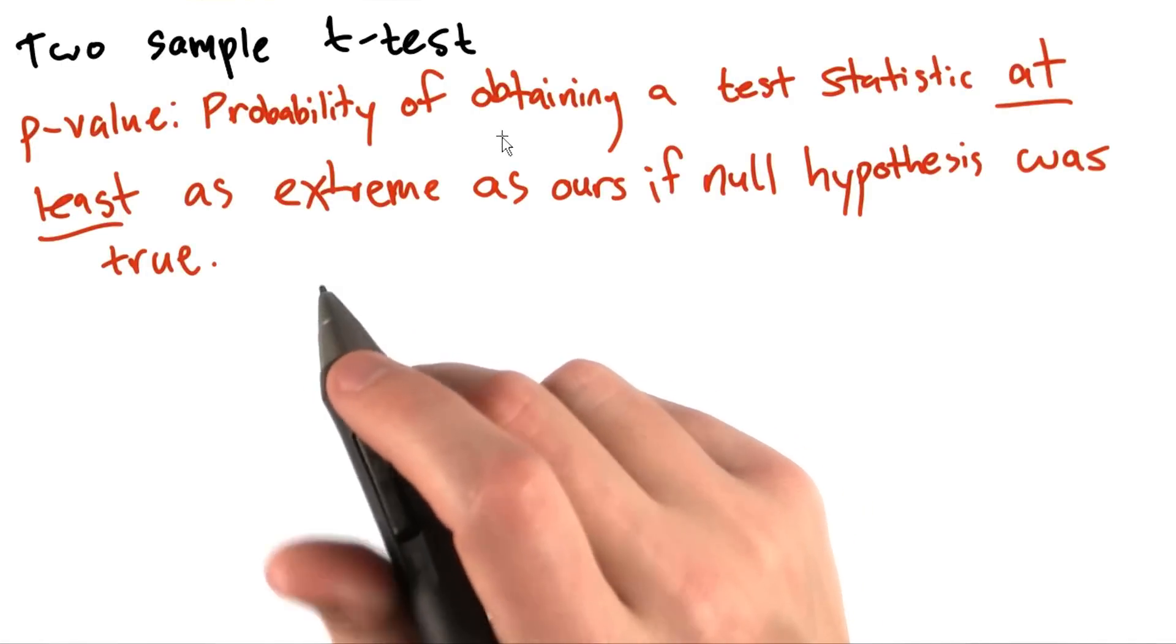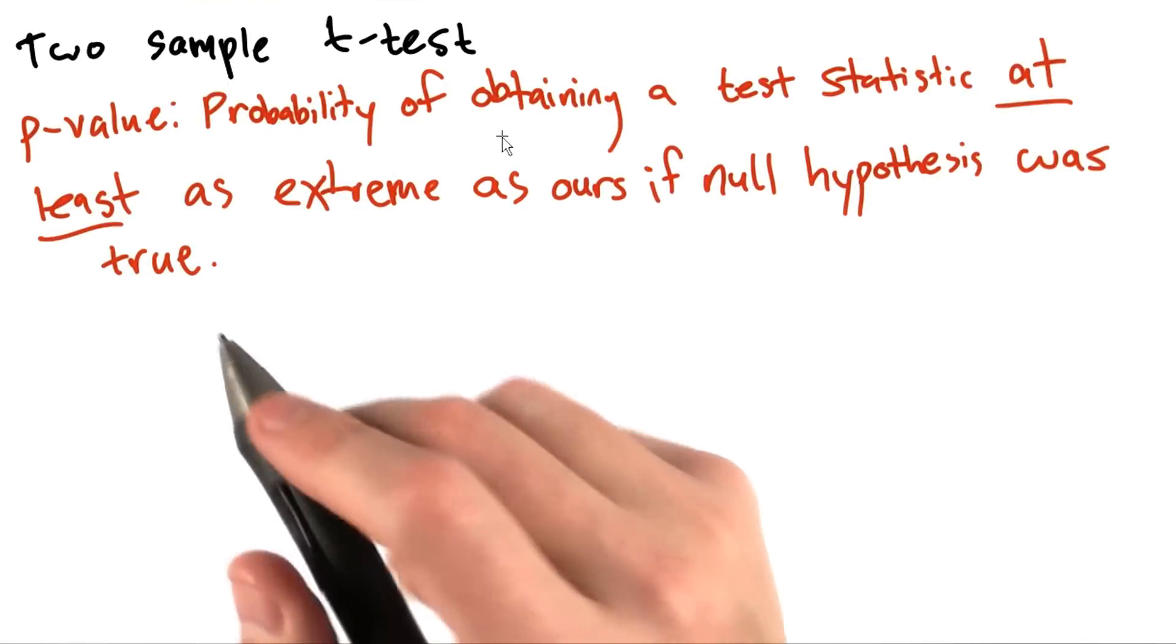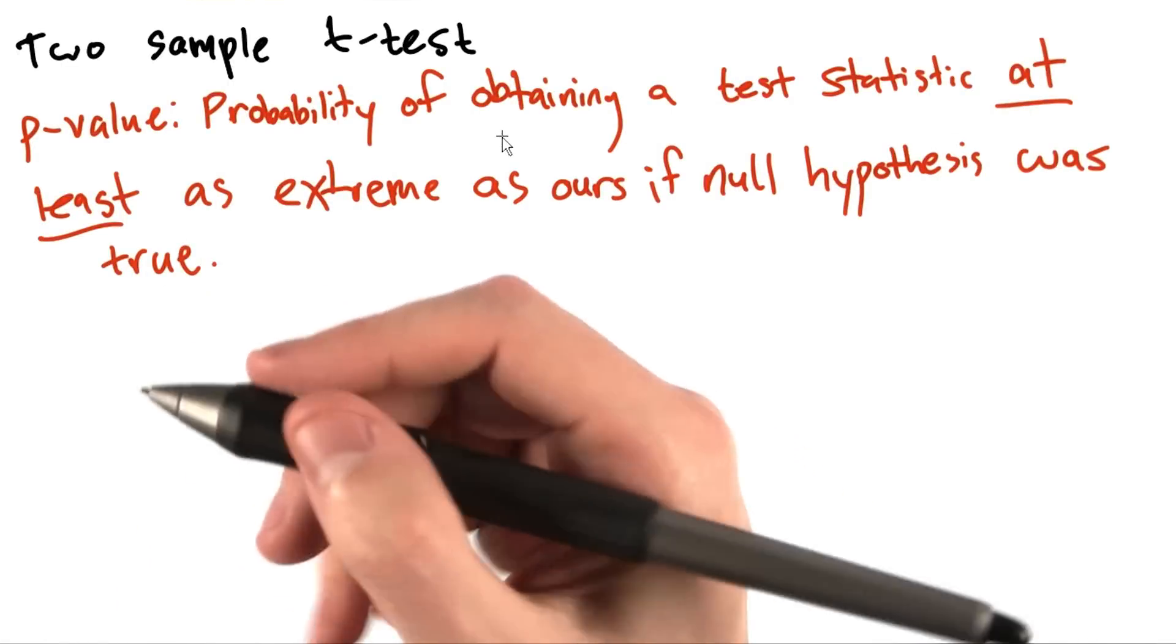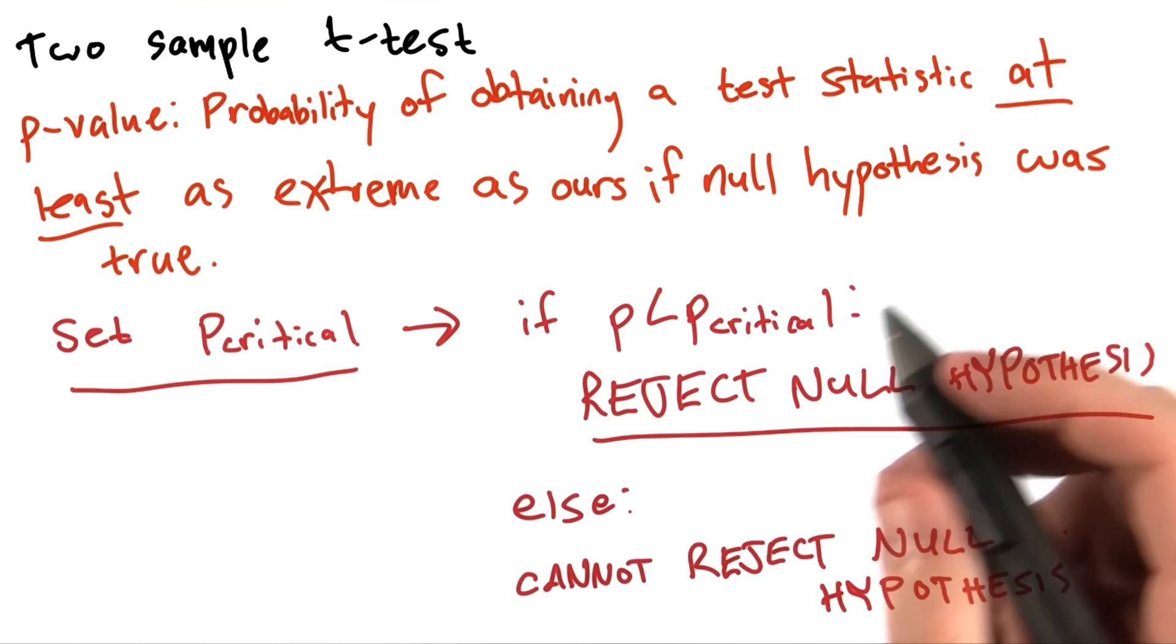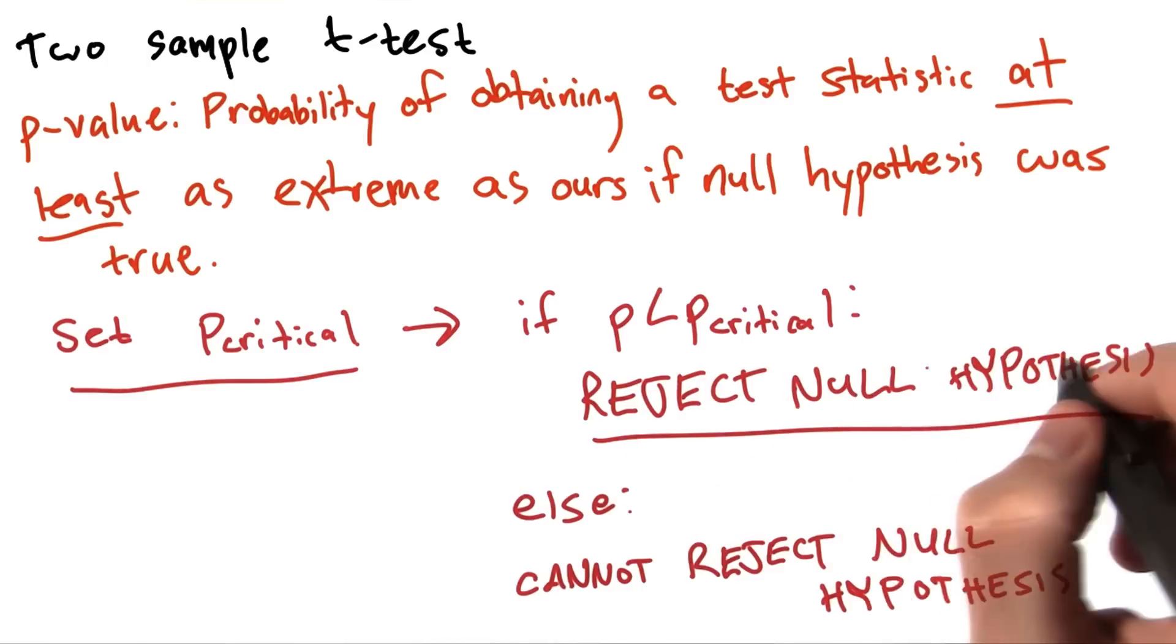When performing a statistical test like this, we usually set some critical value of p. Let's call it p-critical. If p falls below p-critical, then we would reject the null hypothesis.